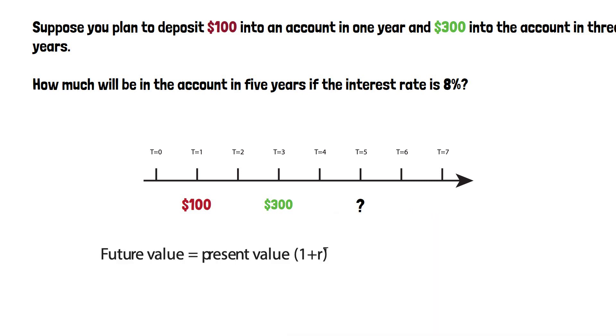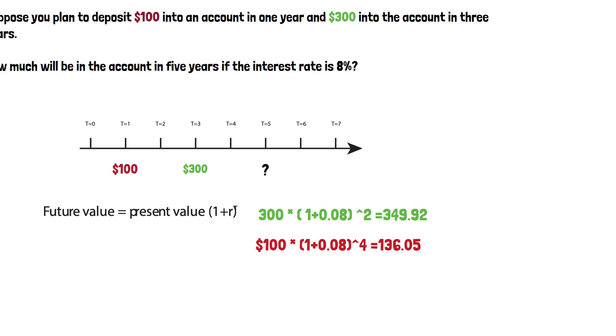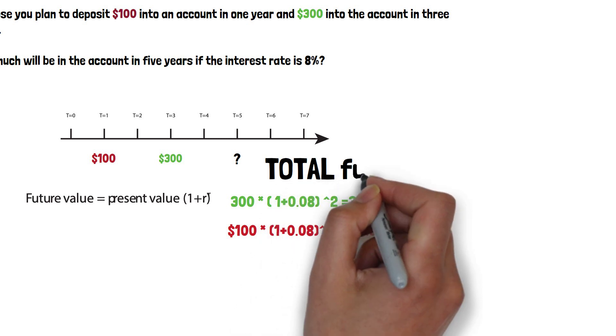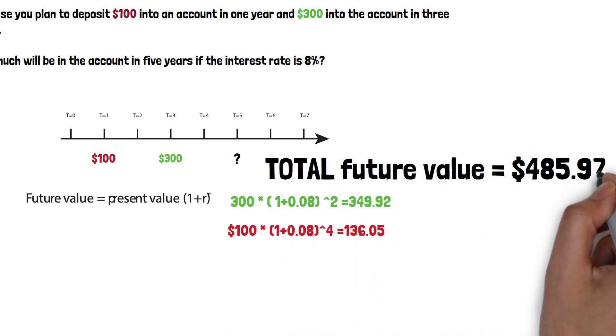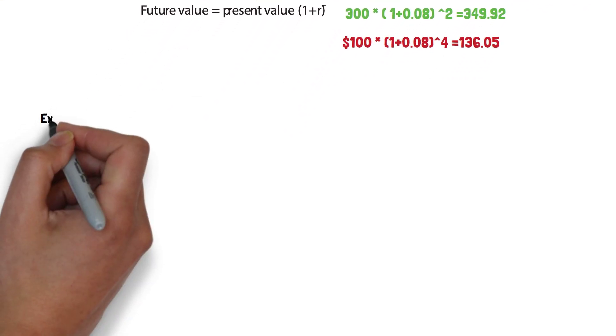We want to know the future value at the end of the fifth year. We use the formula future value equals present value times one plus interest rate to the power of t. So we can calculate the future value for each cash flow. When we add them together, the total future value equals $485.97.